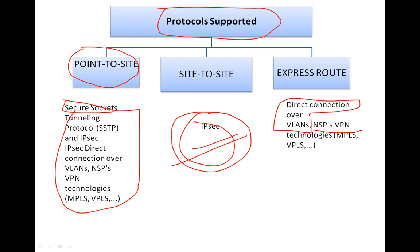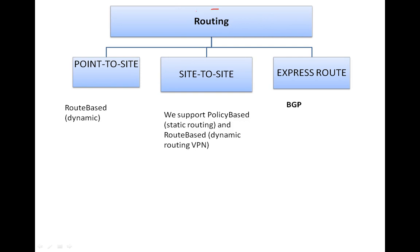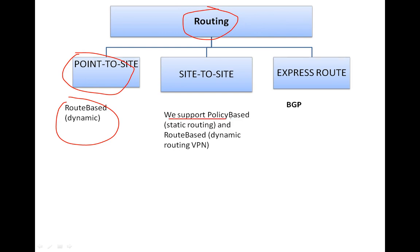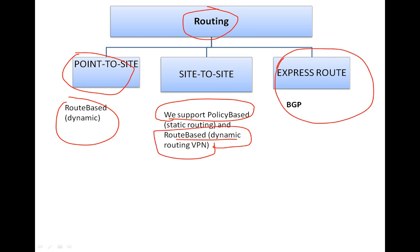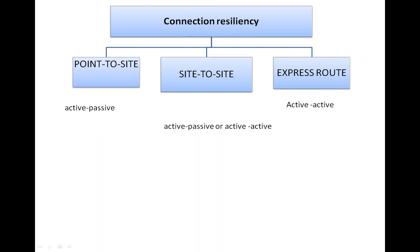For routing: Point-to-Site is route-based dynamic routing only. Site-to-Site supports both policy-based static routing and dynamic routing. ExpressRoute uses BGP — Border Gateway Protocol.